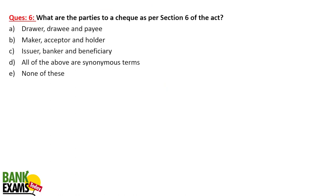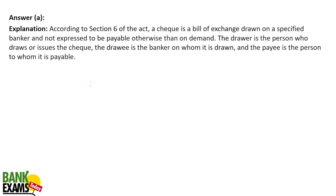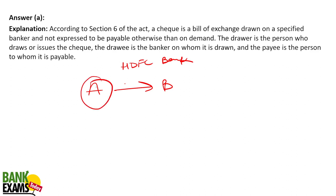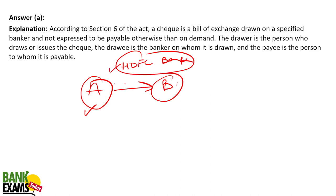What are the parties to a cheque as per Section 6 of the act? A cheque has three parties: the drawer, the drawee, and the payee. For example, A gave B a cheque of HDFC Bank. A is the drawer — the person who draws the cheque. HDFC Bank is the drawee — the bank on which the cheque is drawn. B is the payee — the person who is to receive the payment. Many students get confused here, so please remember this.